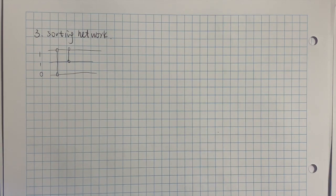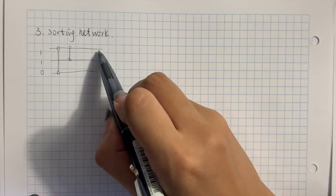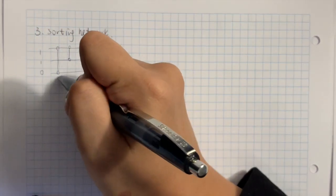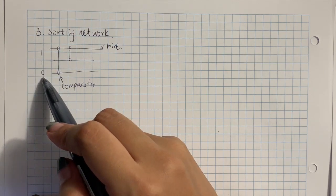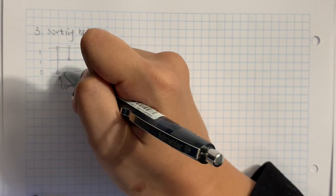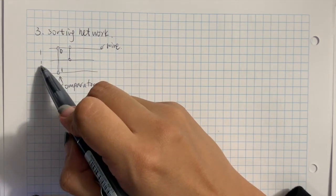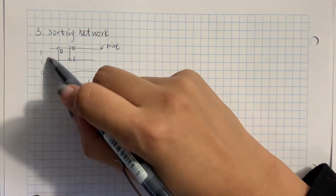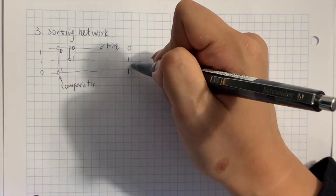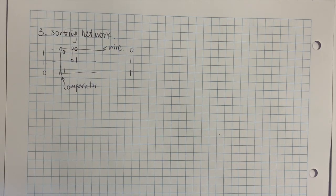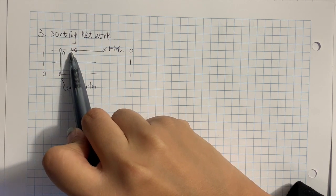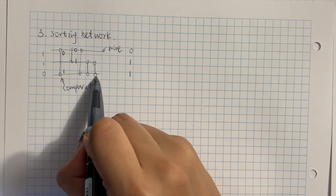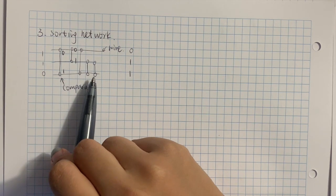In the third part, we are going to talk about sorting network. A sorting network consists of a bunch of wires — each wire corresponds to a number. Between the wires, we have comparators. A comparator will compare two numbers and swap them so the larger one is on top. So in this case, it swaps one and zero. The next comparator compares zero and one, and since zero is smaller, zero remains in position. After this network, we get a sorted list: zero, one, one. We define the depth of a sorting network as the maximum number of comparators on any single wire.